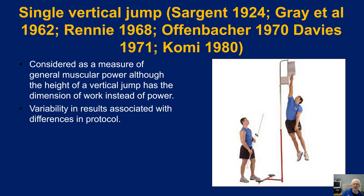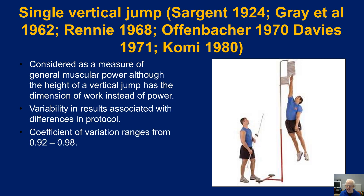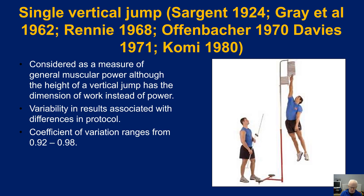If we ask participants to jump with hands on hips, that will obviously reduce the jump height, which suggests participants appear less powerful — but it is probably more consistent in what we actually measure. When we look at the coefficient of variation, which is simply how much variability there is in the data, it is calculated as the standard deviation divided by the mean, multiplied by 100, giving a percentage. Some authors report coefficients of variation of less than one percent, arguing this is highly reliable. However, you have to be very cautious of this data.